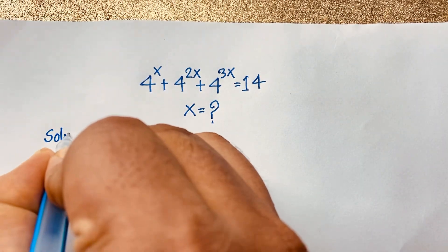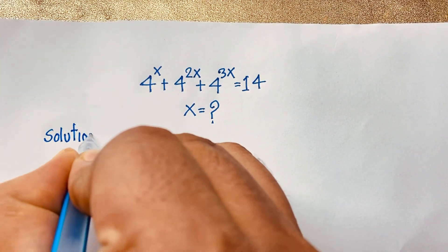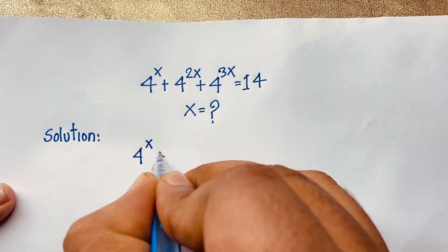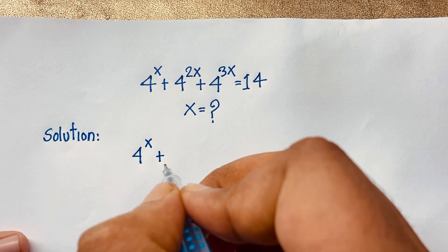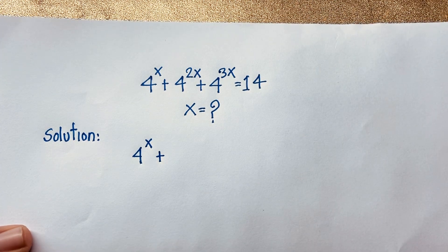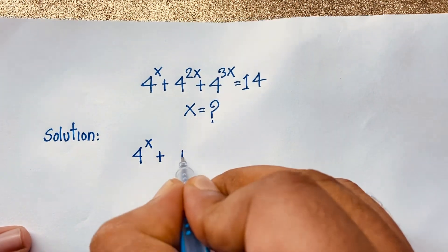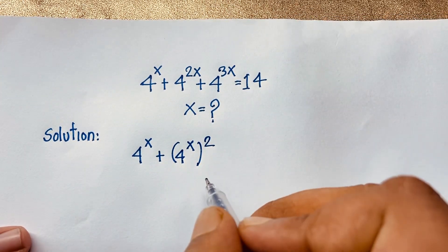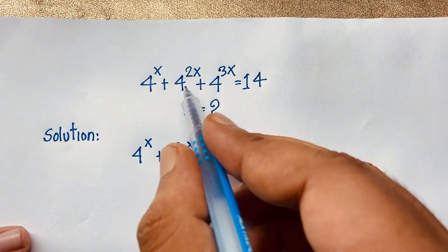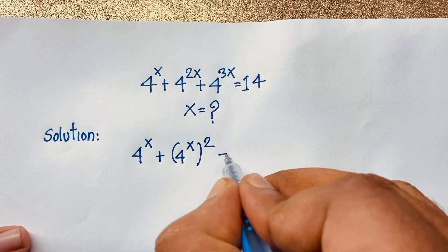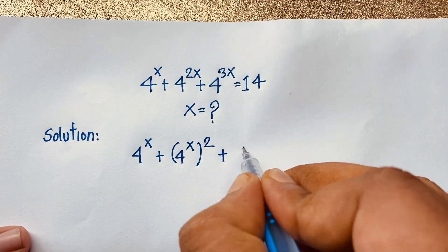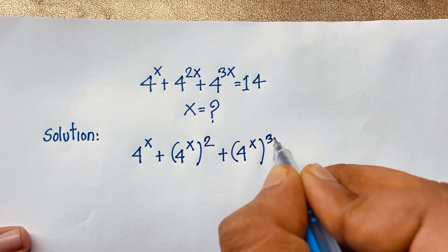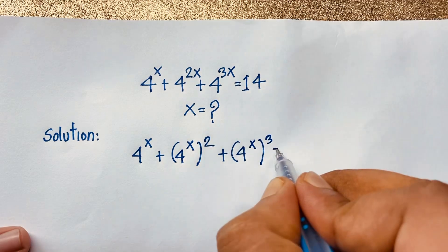Our question is: 4 to the power x plus 4 to the power 2x plus 4 to the power 3x equals 14. We can rewrite: 4 to the power x, then (4 to the power x) squared gives 4 to the power 2x, and (4 to the power x) cubed gives 4 to the power 3x, all equal to 14.